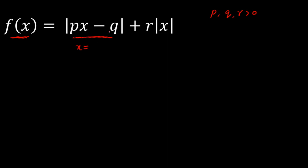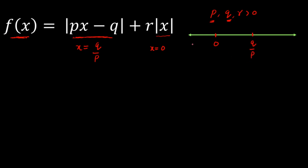Let's calculate the value of x when the inside argument is zero: that gives x equal to q over p. Similarly, modulus of x changes its behavior around zero. So I'll plot x equal to zero and x equal to q over p on the number line. Since q is positive and p is positive, q over p is also positive, so it is located to the right of zero. This divides the number line into three parts.